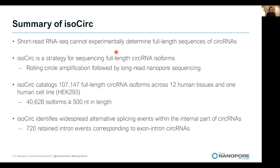To wrap up: I talked about the limitation of short-read RNA sequencing for circular RNA analysis. I introduced ISOCIRC, a novel strategy combining rolling circle amplification with long-read nanopore sequencing to sequence full-length circular RNAs. Using ISOCIRC, we identified over 100,000 full-length circular RNA isoforms across the human transcriptome, including over 40,000 isoforms longer than 500 nucleotides in length. Finally, we identified widespread alternative splicing events within the internal part of circular RNAs, including 720 retained intron events corresponding to exon-intron circular RNAs. Thank you for your attention; I'll be happy to take questions during the Q&A session.